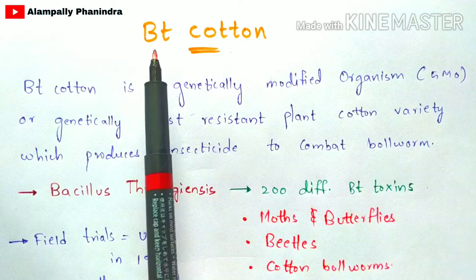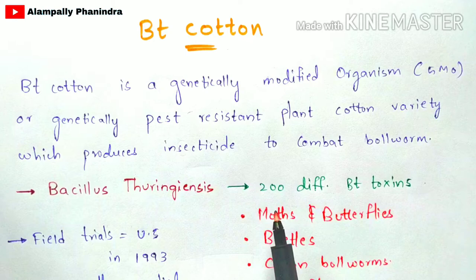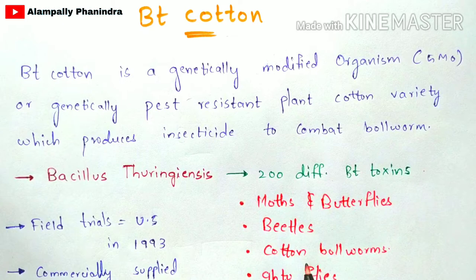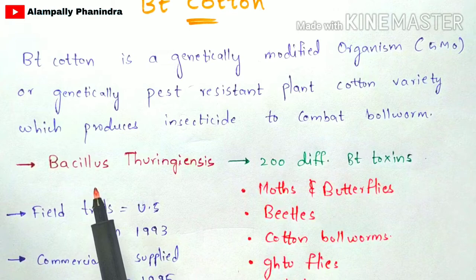BT indicates Bacillus thuringiensis. Bacillus thuringiensis is a bacterium that consists of 200 different BT toxins. Each of these BT toxins can kill different types of insects, like moths and butterflies, beetles, cotton boll worms, flies, and others. Each insect can be killed by a different type of toxin produced by Bacillus thuringiensis.